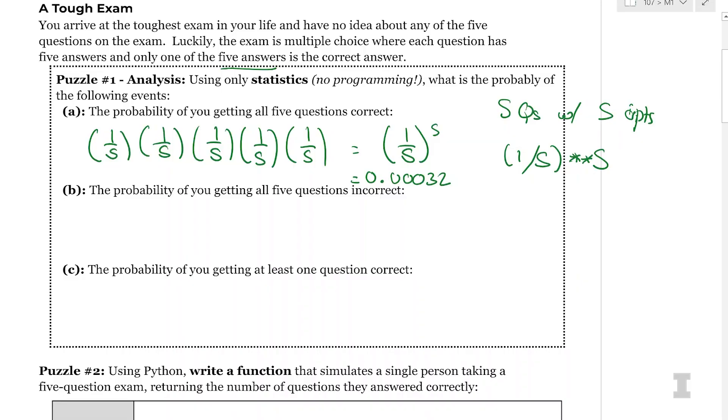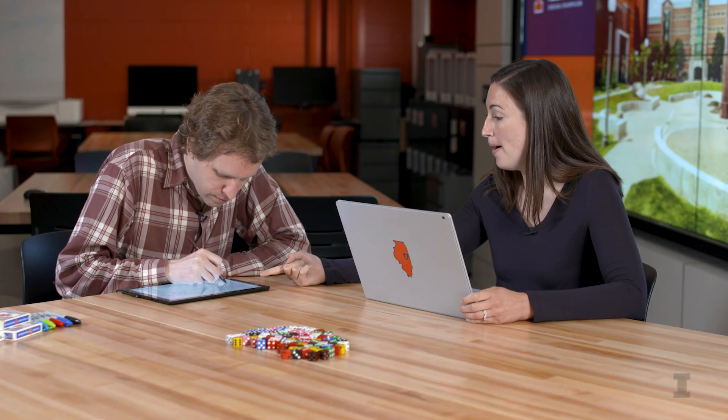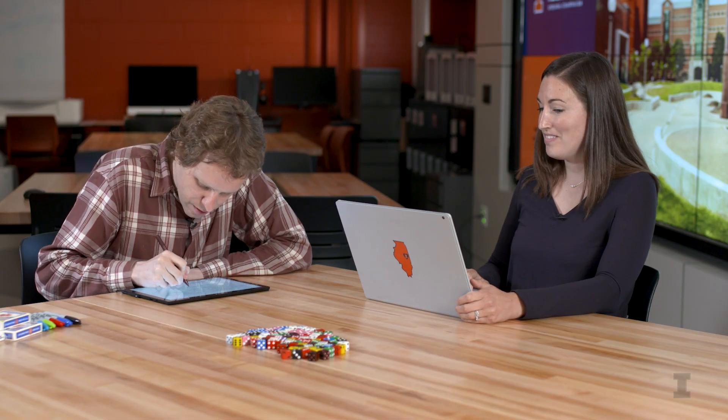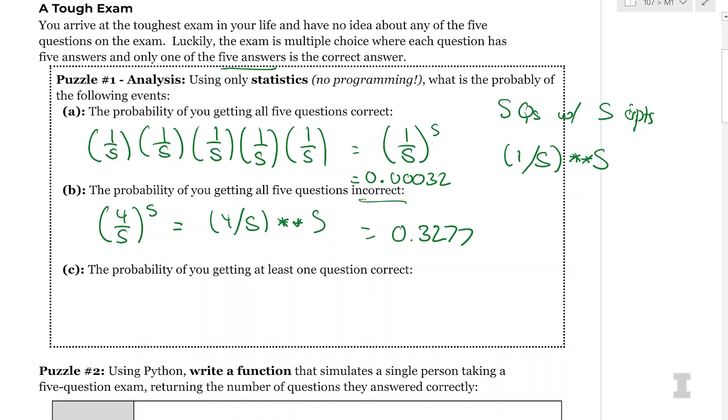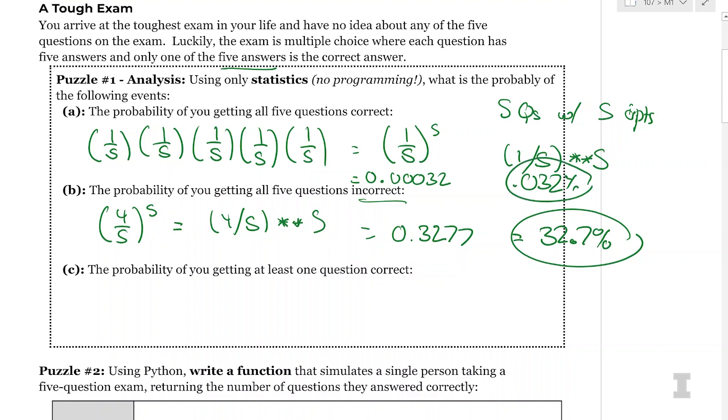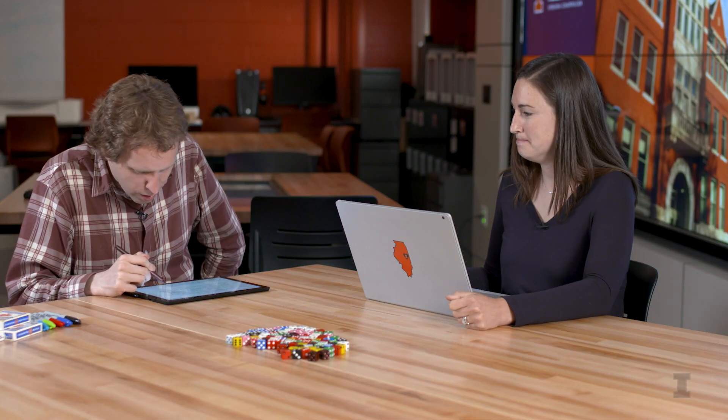So part B, the probability of you getting all five questions incorrect. So that would be basically the opposite chance. So we have four fifths is the probability you're going to get it wrong and then raised to the fifth power. So four fifths times times five is the probability of you getting all incorrect. And that is 0.3277, so that is 32.7 percent. So quite a bit more likely than 0.032 percent. Way, way, way more likely, something like a thousand times more likely.